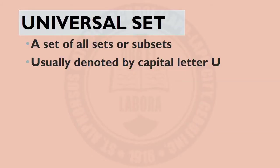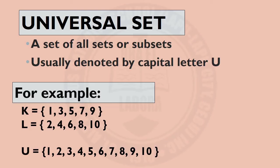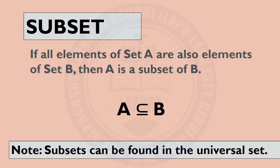Now let's discuss more about universal set. It is a set of all sets or subsets, usually denoted by capital letter U. For example, set K has elements 1, 3, 5, 7, and 9, while set L has elements 2, 4, 6, 8, and 10. If we are going to write all the elements in the universal set, set U is equal to 1, 2, 3, 4, 5, 6, 7, 8, 9, and 10 — or all elements found in set K and in set L. Now, what is a subset? If all elements of set A are also elements of set B, then A is a subset of B. Take note: subsets can be found in the universal set.